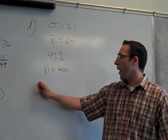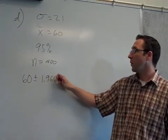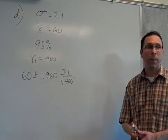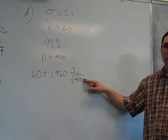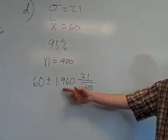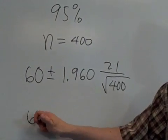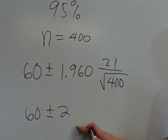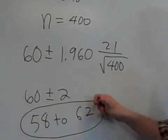So if we go to work on the math, a lot of them are staying the same. 60 plus or minus, we're back to 1.960, with 21, and then instead of 49 people, 400 people. And you can do that without a calculator. Square root of 400 is 20. 21 divided by 20 is basically 1. 1 times 1.960 is going to be putting it at pretty much just like 2. So it would be from 58 to 62. You can see how much more specific that interval is.